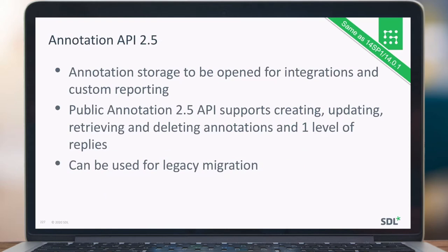For the annotations API introduced in 14 SP1, we have an API for storing and opening annotations. It's actually an integration part and can also be seen as some kind of custom reporting. If you want to create that, you can do it with the API. It supports creating, updating, retrieving and deleting annotations, and only one level of replies. This API can also be used for a legacy migration with the collective review. If you want to know more about annotations, please watch the collective spaces functionality overview session.